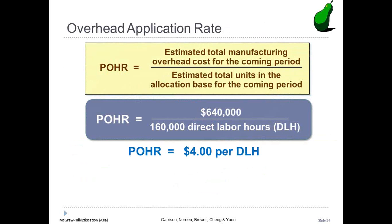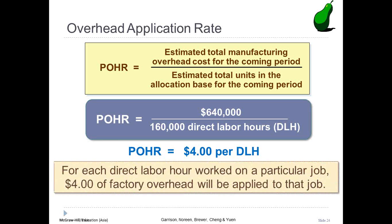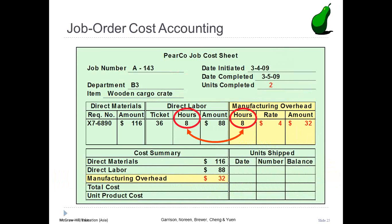Recall the equation for calculating the predetermined manufacturing overhead rate. At PearCompany, overhead is allocated on the basis of direct labor hours worked on a particular job. PearCompany's predetermined overhead rate is $4 per direct labor hour, so each job is charged $4 of overhead for each hour of direct labor worked. An employee worked 8 hours on job A143, so we apply $32 of overhead to this job.